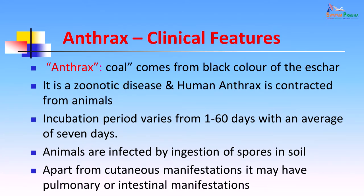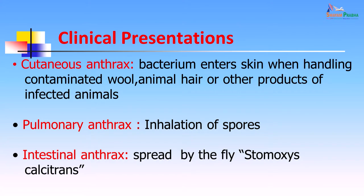Anthrax comes from the word for coal, which gives the black colour of the eschar. It is a zoonotic disease and human anthrax is usually contracted from animals. The incubation period can vary from 1 to 60 days, with an average of 7 days. Animals are infected usually by ingestion of spores in the soil; animal-to-animal infection usually does not occur. In cutaneous anthrax, the bacterium entered the skin when handling contaminated wool, animal hair, or other products of infected animals — this shepherd had taken an infected sheep on his back and the spores caused the malignant pustule.